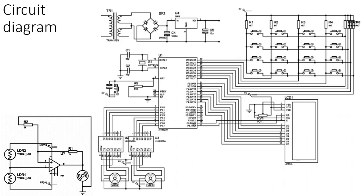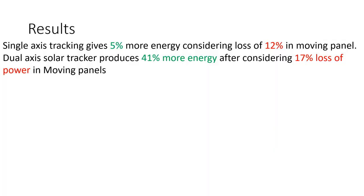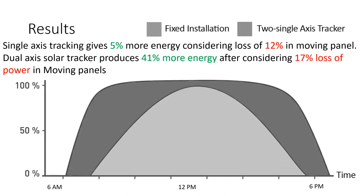This is the circuit diagram of the project that we built. This is how the final hardware looks like. When compared to a single axis system which have only 5% of the overall gain, the dual axis tracker system gives 41% more energy after considering the 17% loss in the moving panel.